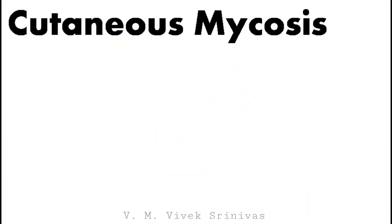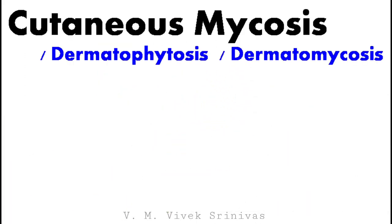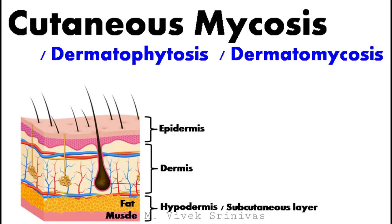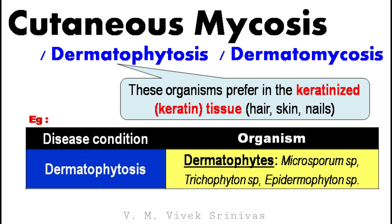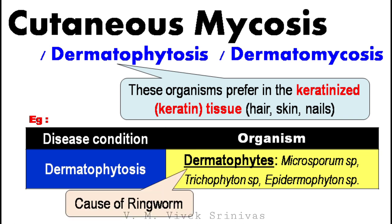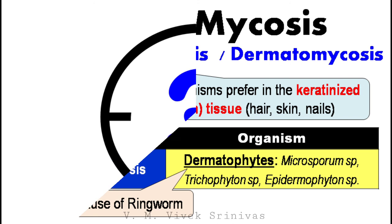Next, cutaneous mycosis, or dermatophytosis, or dermatomycosis. These organisms infect the keratin-rich tissues, that is keratinized tissues like hair, skin, and nails. The disease condition dermatophytosis, caused by a group of organisms under dermatophytes like Microsporum, Trichophyton, and Epidermophyton, which causes ringworm infection, are very good examples for cutaneous mycosis.